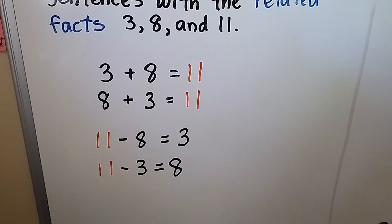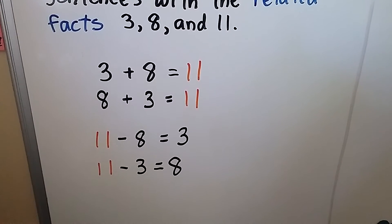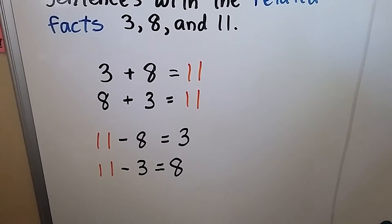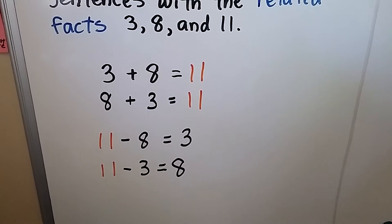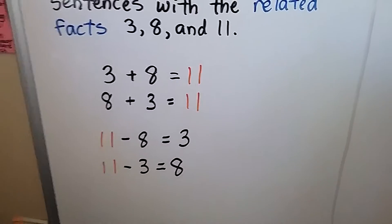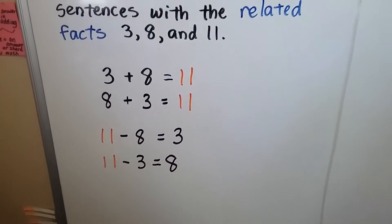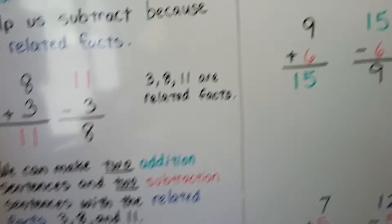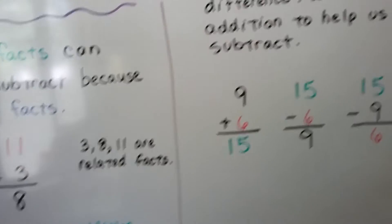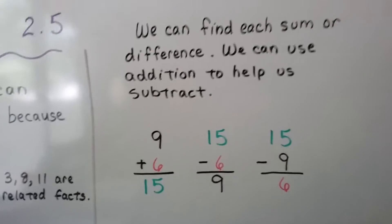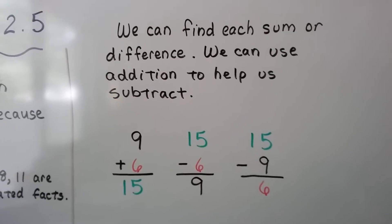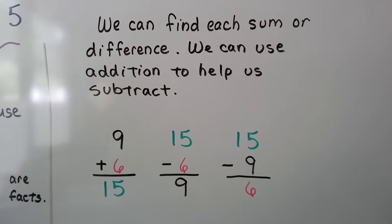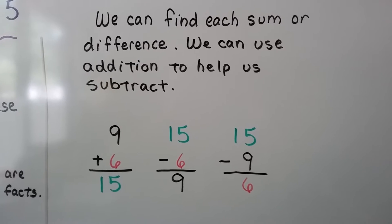Eleven minus eight equals three. Eleven minus three equals eight. Two addition and two subtraction sentences. We can find each sum or difference. We can use addition to help us subtract.